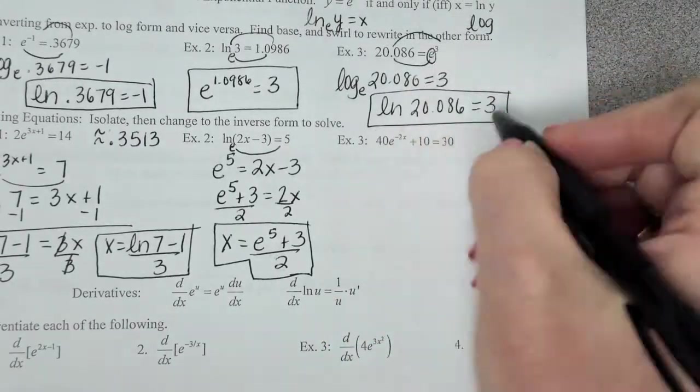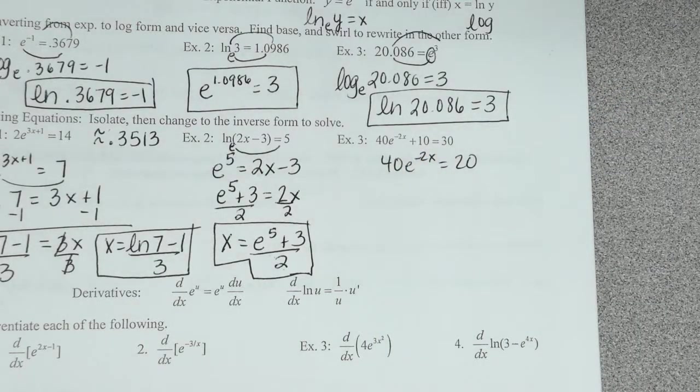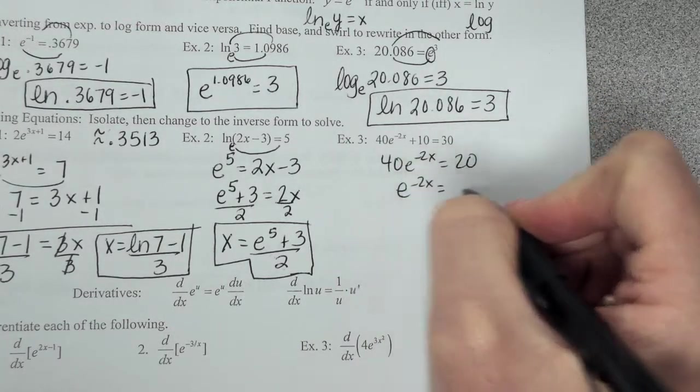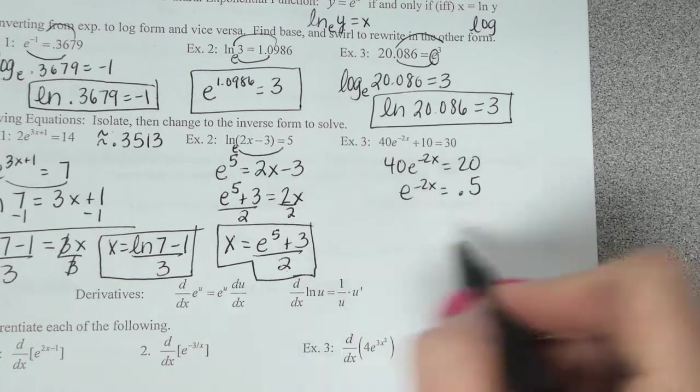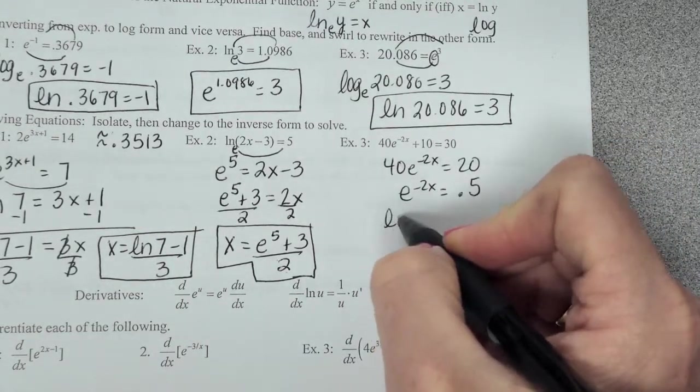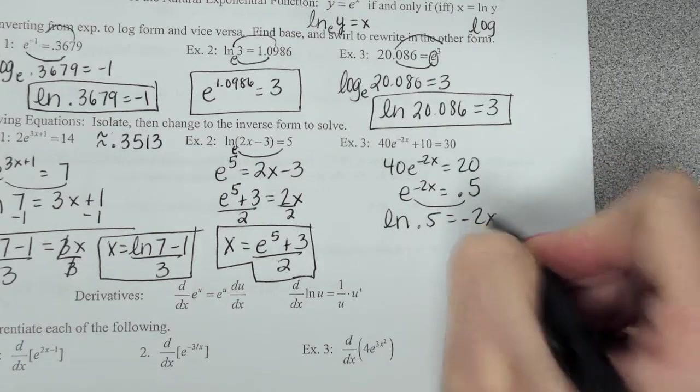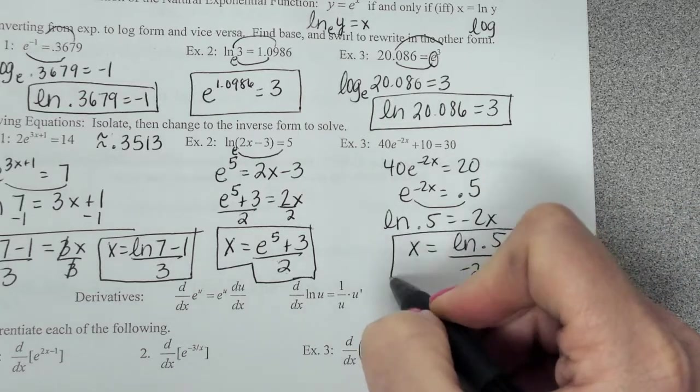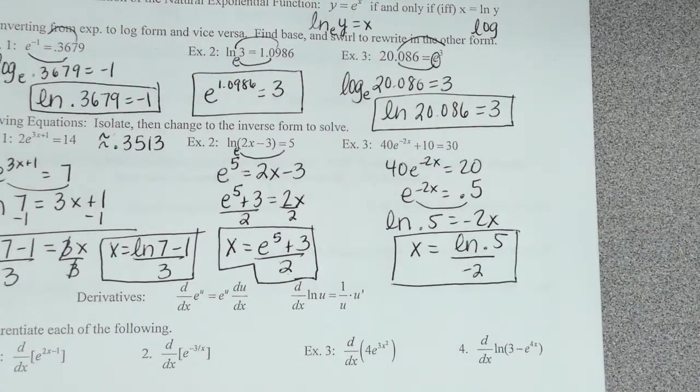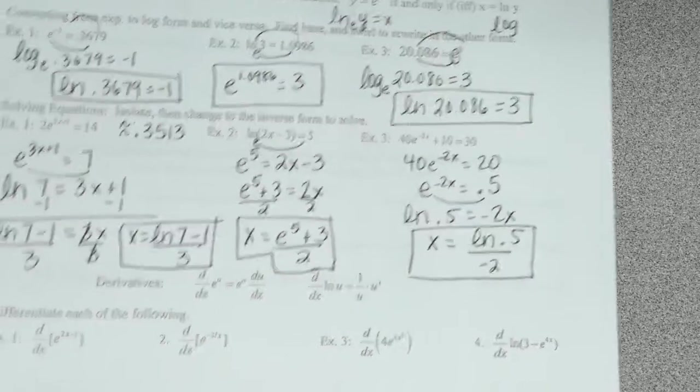All right. Solving on this one, we're going to subtract 10. We get 40e to the negative 2x equals 20. We're trying to isolate the e. So what do we do now? Divide by 40. So e to the negative 2x equals 0.5 or 1 half. So now to finish it, I have to rewrite it as a log. So it's log base e, which is natural log, swirl it around, of 0.5 equals negative 2x. So then x is going to be the natural log of 0.5 divided by negative 2. So that is our exact solution. Questions on that?